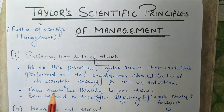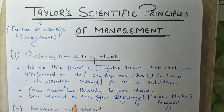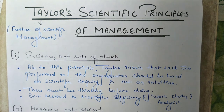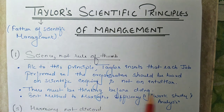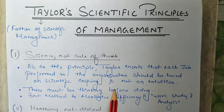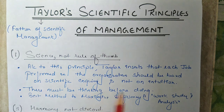We will see the positives and negatives of both methods and select the best solution. You don't have to be rigid — you have to select the one best way of doing the job scientifically. There must also be thinking before doing, which means you should identify the problem, find out the alternative solutions, and select the best possible solution to the problem.